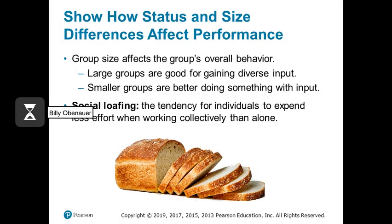As we think about forming groups, we should consider group size. Large groups are good for gaining diverse input and idea generation. But when we actually have to produce something, smaller groups can be better because of social loafing — the tendency for people to do less when working with others than they would on their own. If the task doesn't require as many people as we have, some will naturally step back, and that social loafing can be frustrating and lead to conflicts.